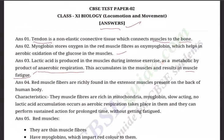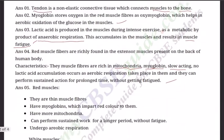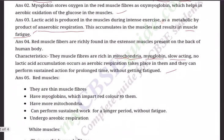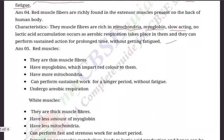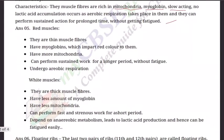Question four: Red muscle fibers are richly found in the extensor muscles present on the back of the human body. Their characteristics: they are rich in mitochondria and myoglobin, are slow-acting, no lactic acid accumulation occurs as aerobic respiration takes place in them, and they can perform sustained action for a prolonged time without getting tired or fatigued.